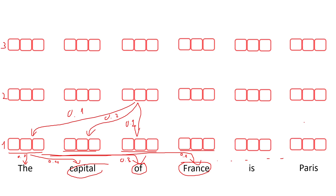It is also useful to know that the attention mechanism can be applied to any kind of set of symbols, not restricted to sequences of words. If you look carefully at the paper, the authors use what is known as positional encoding — they add a kind of encoding to each of the representations in the first layer before computing the query, key, and value embeddings, in order to tell the neural network the real order of the words in the sequence.